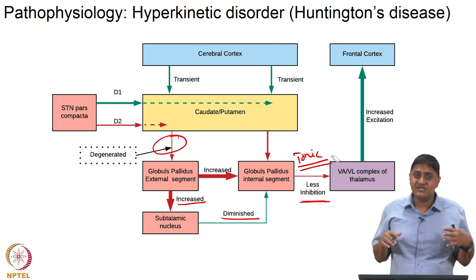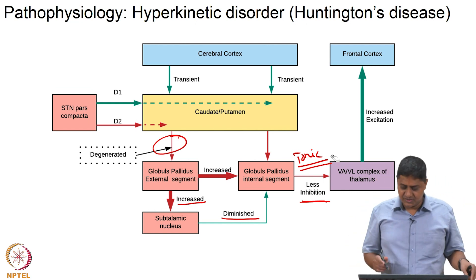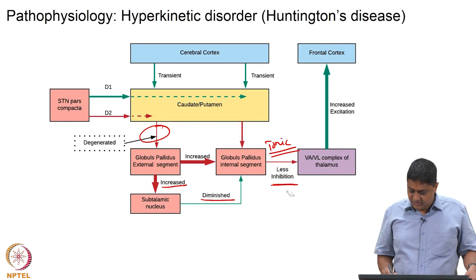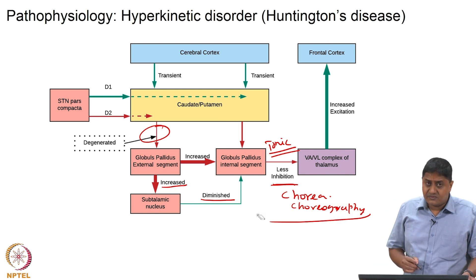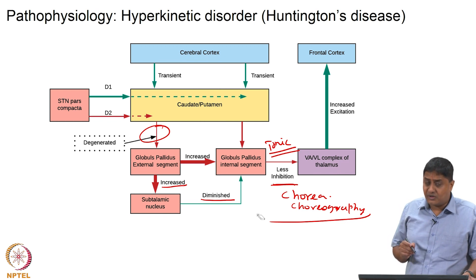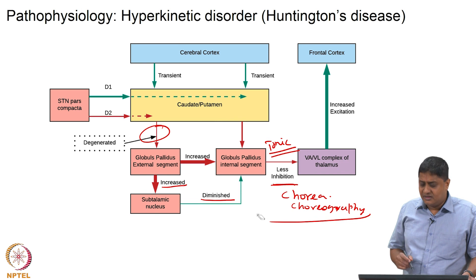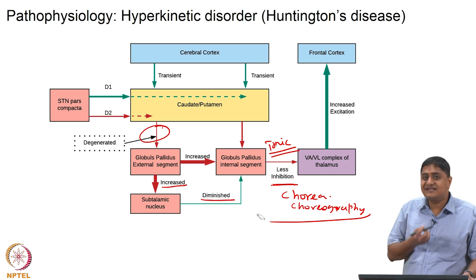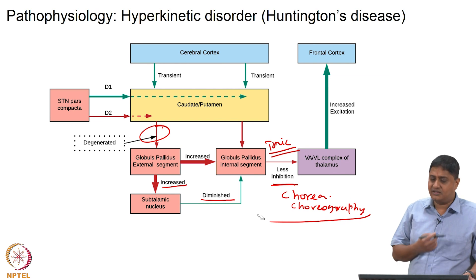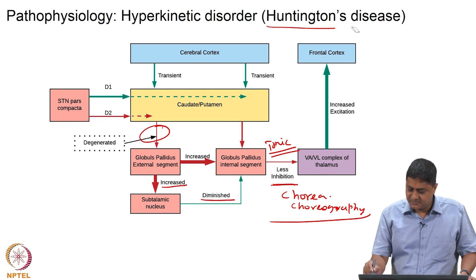The patient produces dance-like unwanted movements. The word chorea is related to choreography, as in dance. If the indirect pathway is selectively degenerated, it produces choreiform or dance-like movements, typical of Huntington's disease.